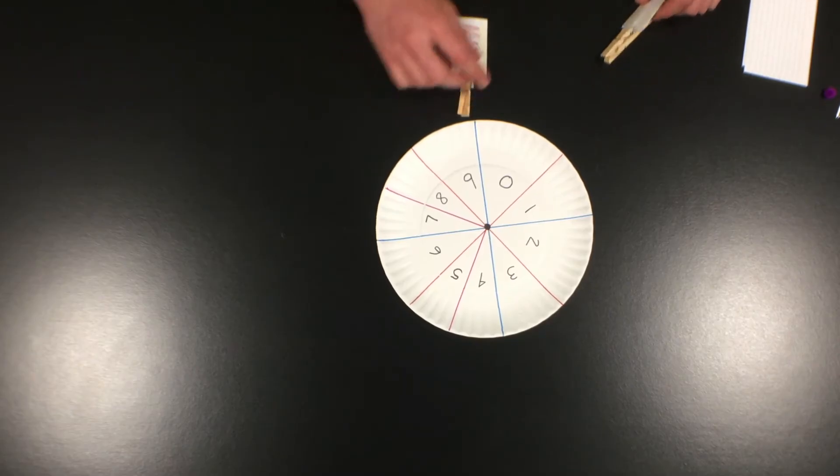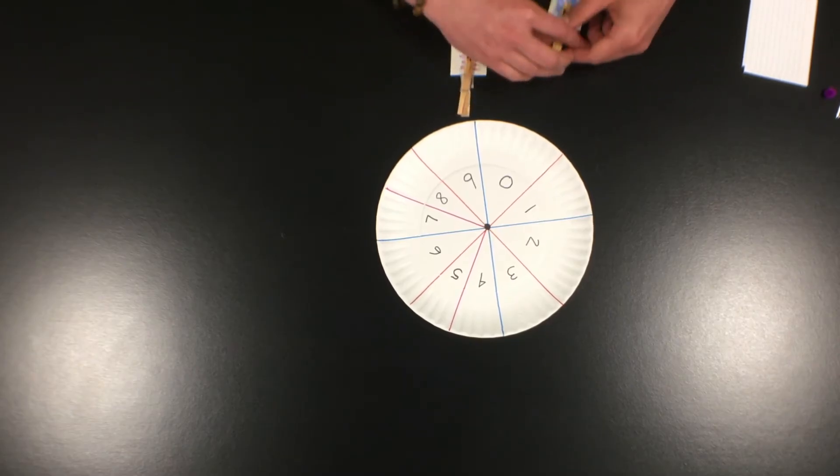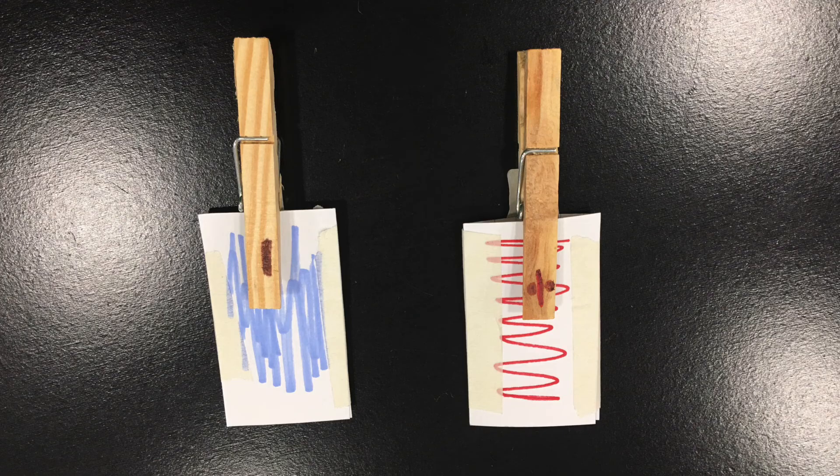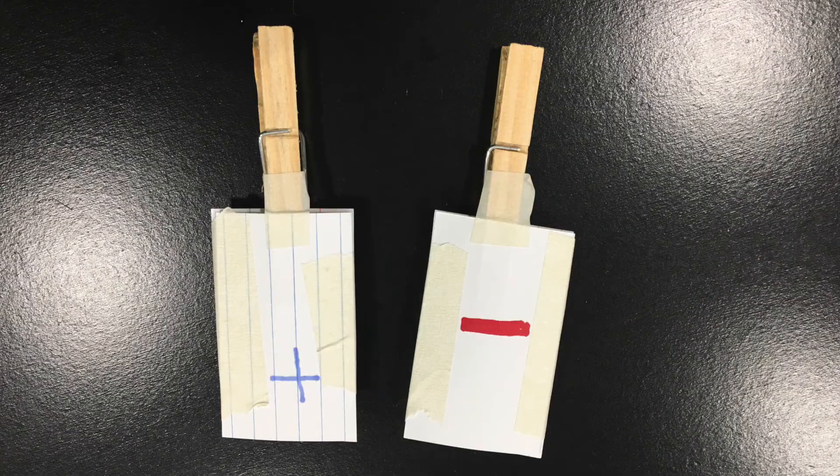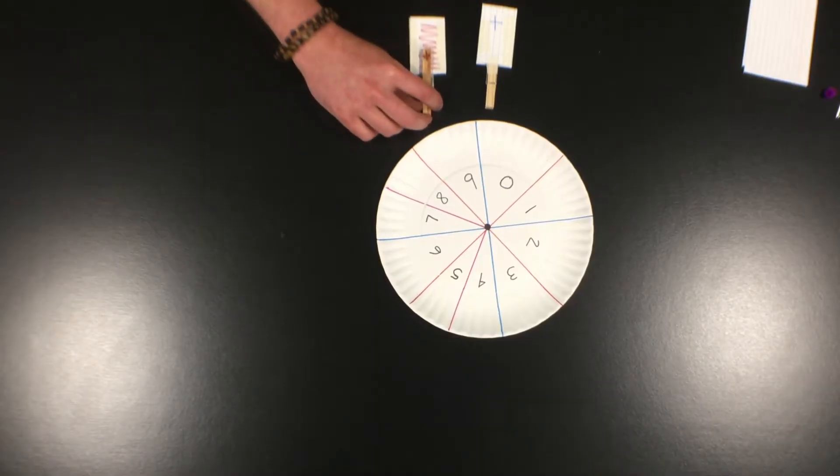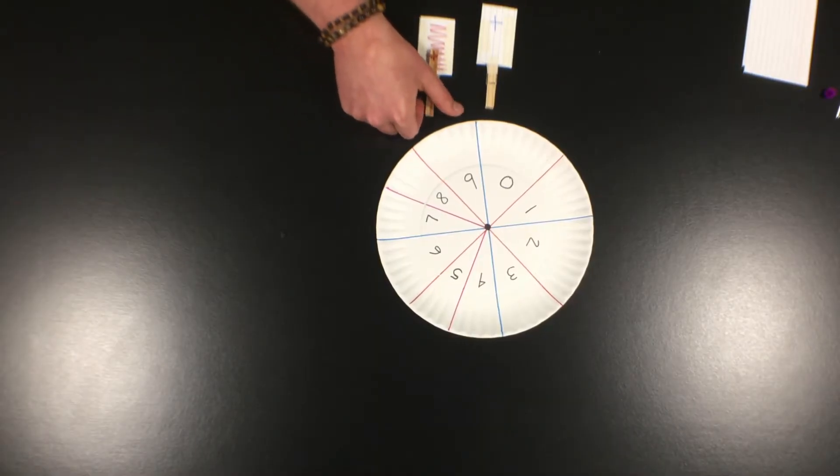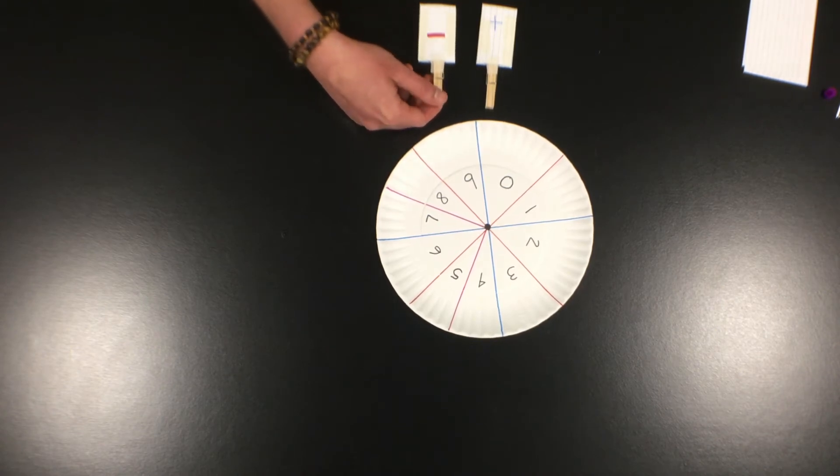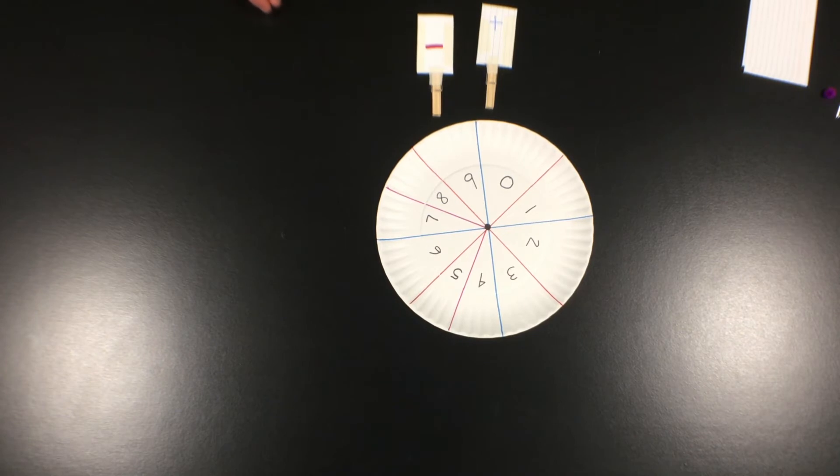Once you get that done, on one clothespin you're going to color it in solid like the blue one. On the other side of the blue one, you're going to put a plus sign. On the other clothespin, you're going to color in solid. You can do the same color or I find it helpful to do a different color. We did red here. Then we're going to put a minus sign on that one.